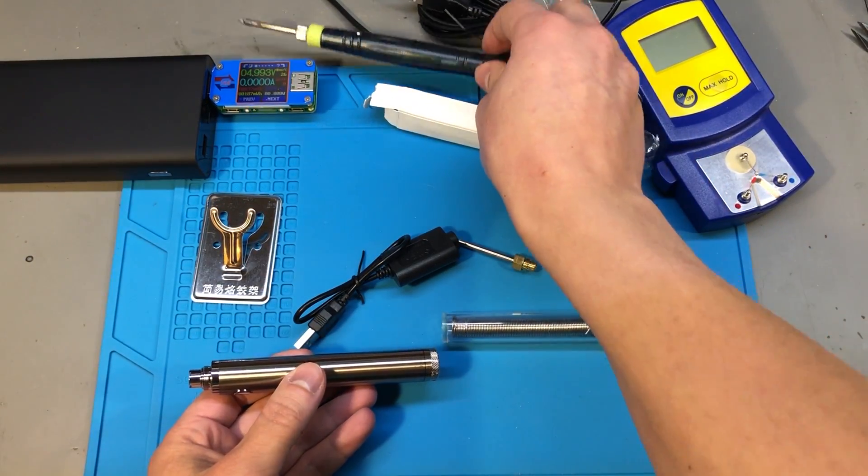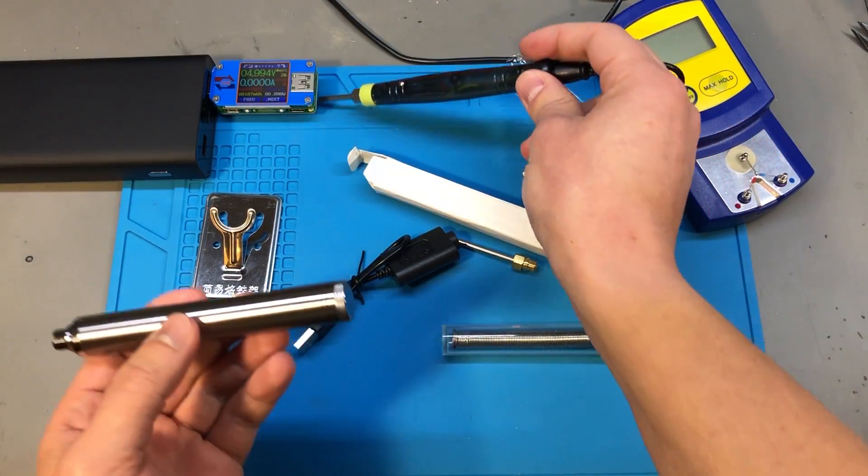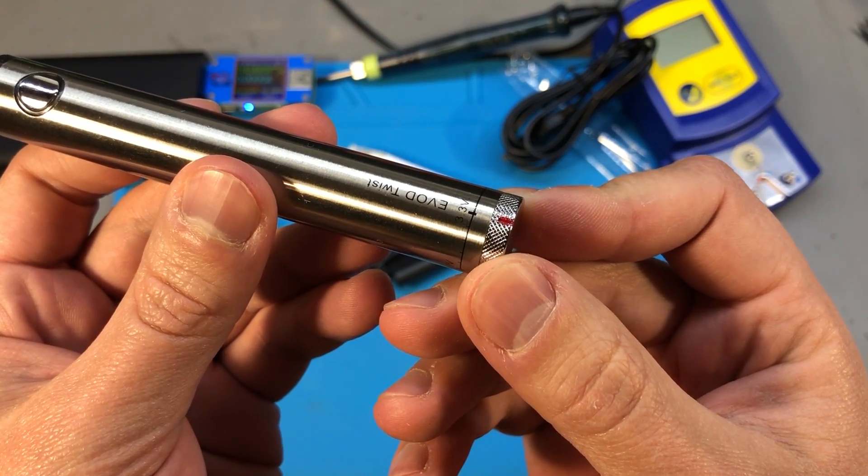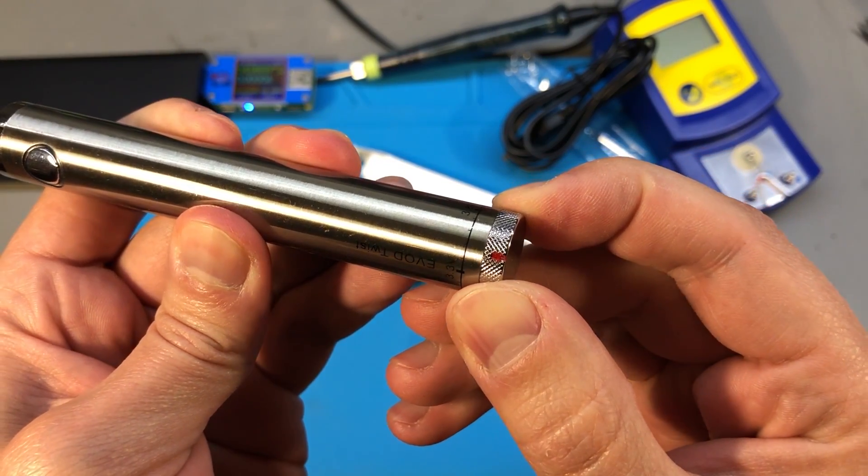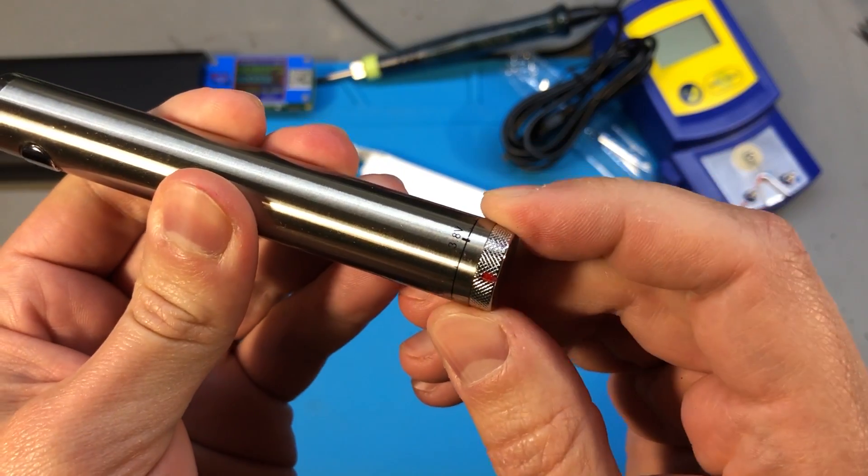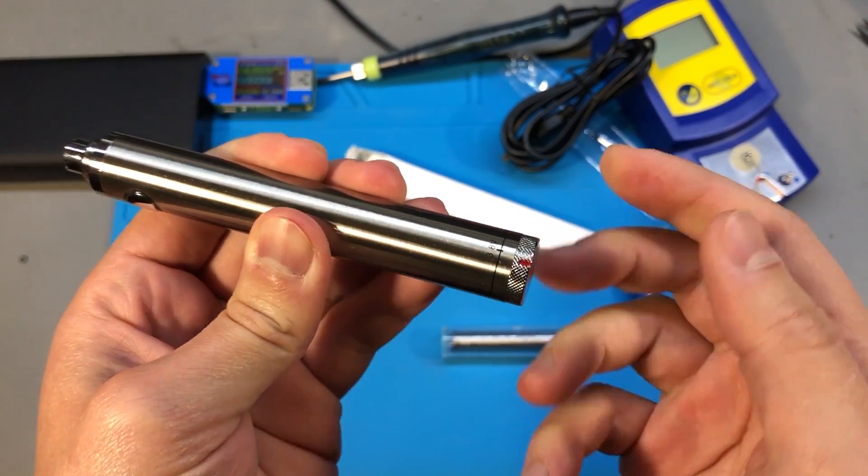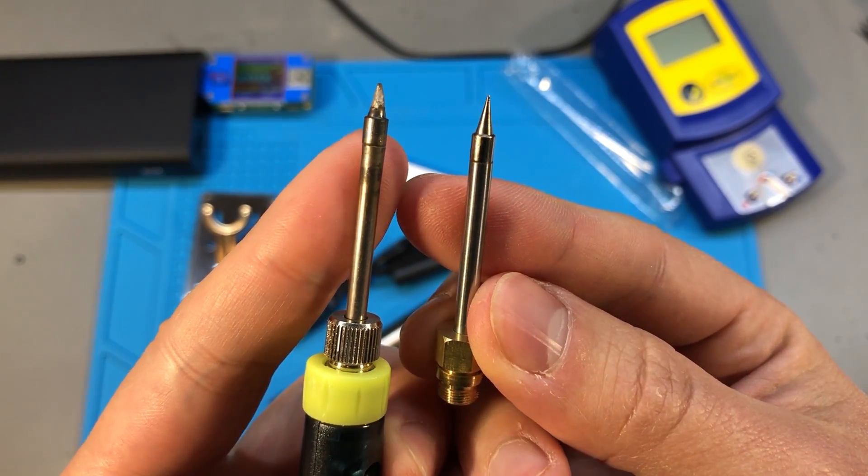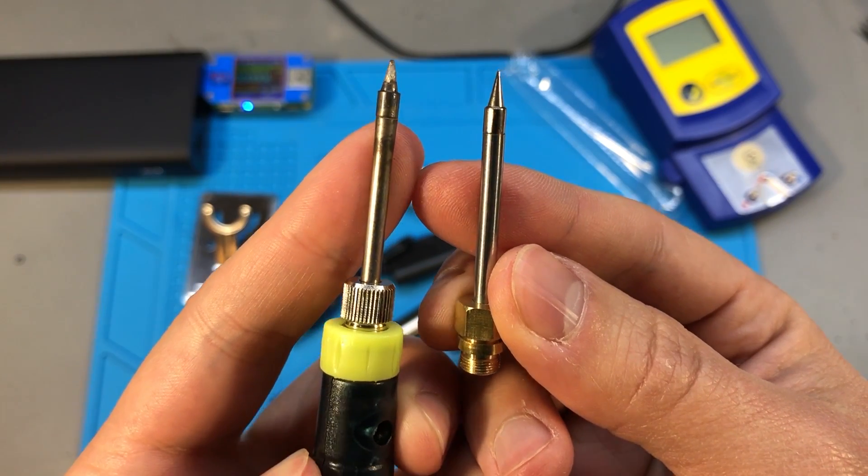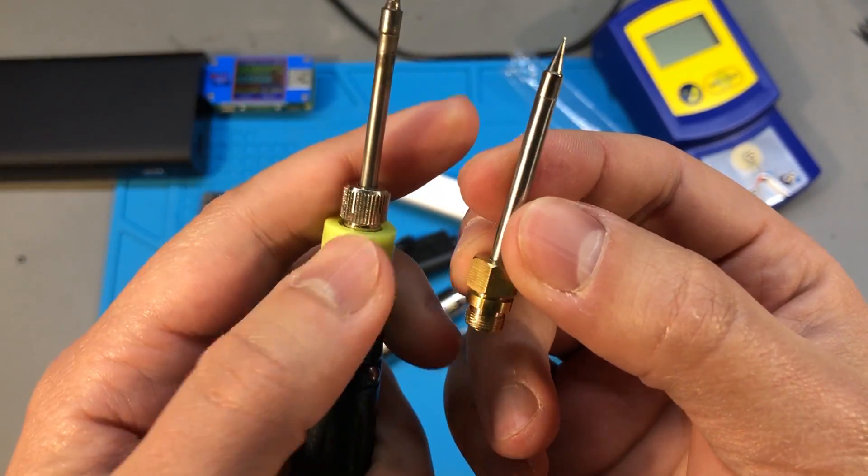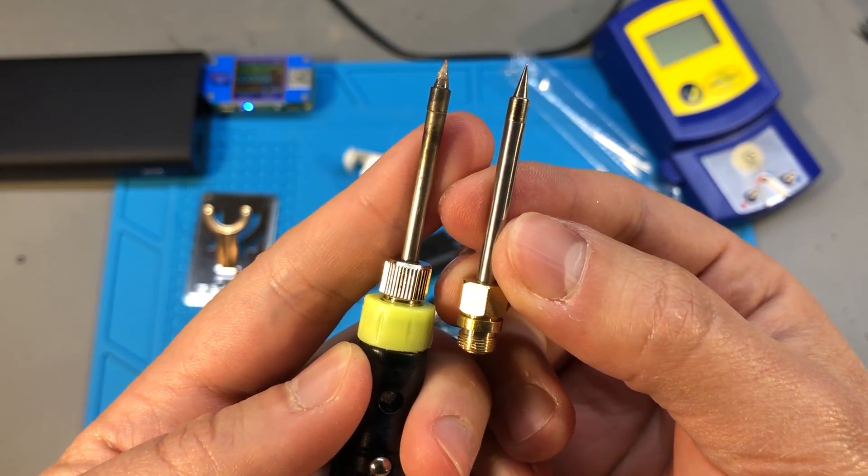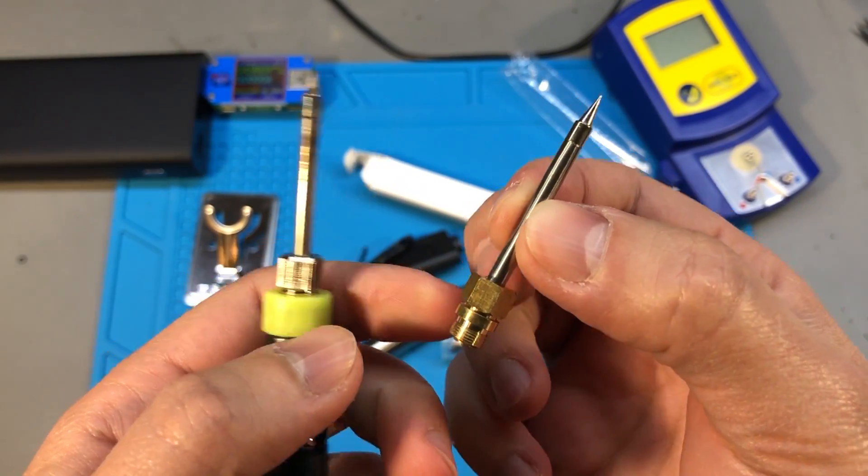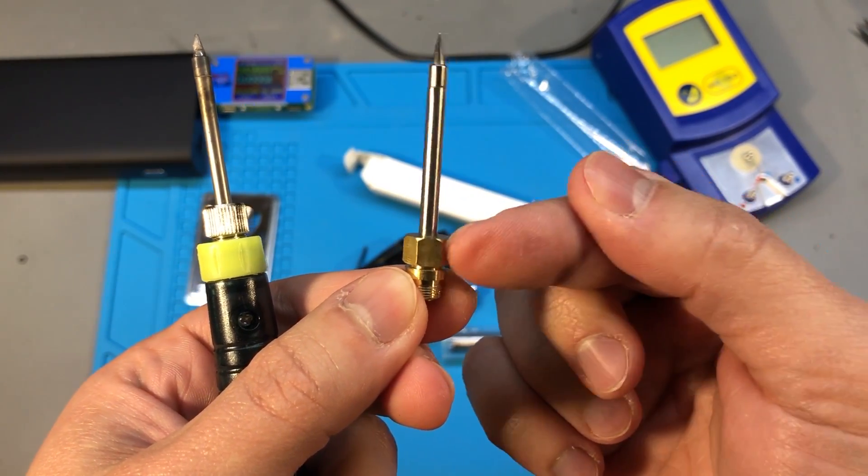Unlike the simple USB soldering iron shown earlier, this one does have some form of adjusting by twisting this cap at the end. They've marked some voltages instead of temperatures for adjustment but I will be testing these settings to give you a reference in terms of temperature. I'll do that later on. This uses an almost identical soldering iron tip with the USB soldering iron, it's also rated for 8W, it should have similar performance but these two are not interchangeable due to slightly different mounting style at the base.